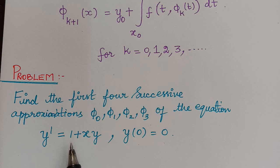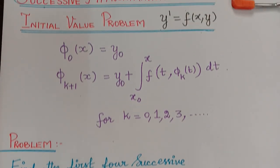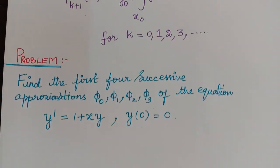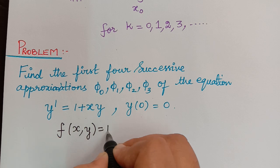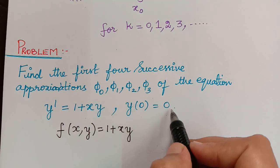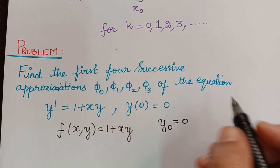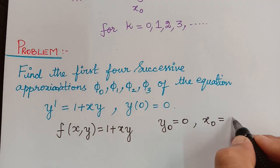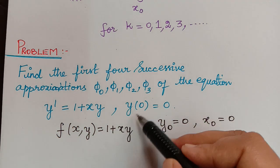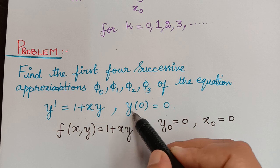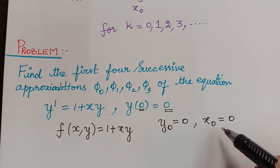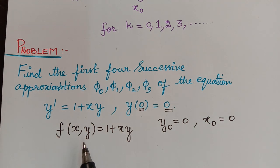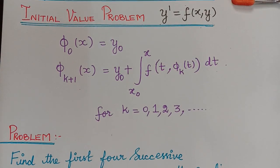This is our initial value problem where y' = 1 + xy. Comparing with the general form, we understand that f(x, y) = 1 + xy. From the initial condition y(0) = 0, we obtain y₀ = 0 and x₀ = 0, since y(x₀) = 0 implies x₀ = 0. So we have our initial conditions and f(x, y) = 1 + xy.